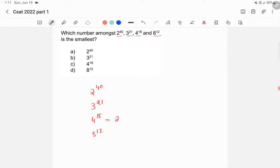So 4 raised to 18 we can write as 2 square, because 4 is 2 square, raised to 18. So it is equal to 2 raised to 2 into 18, and it will come as 2 raised to 36.